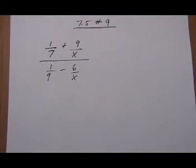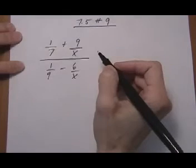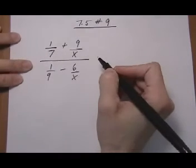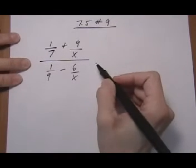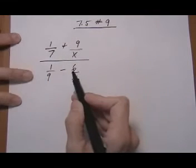Number 9, and I'm going to try to also fit in numbers 10 and 11 on this clip. They're all dealing with complex fractions, and we're going to do each one of them the same way — we're going to turn the division into multiply by the reciprocal. First step: we need to have just one fraction on the top and one fraction on the bottom.